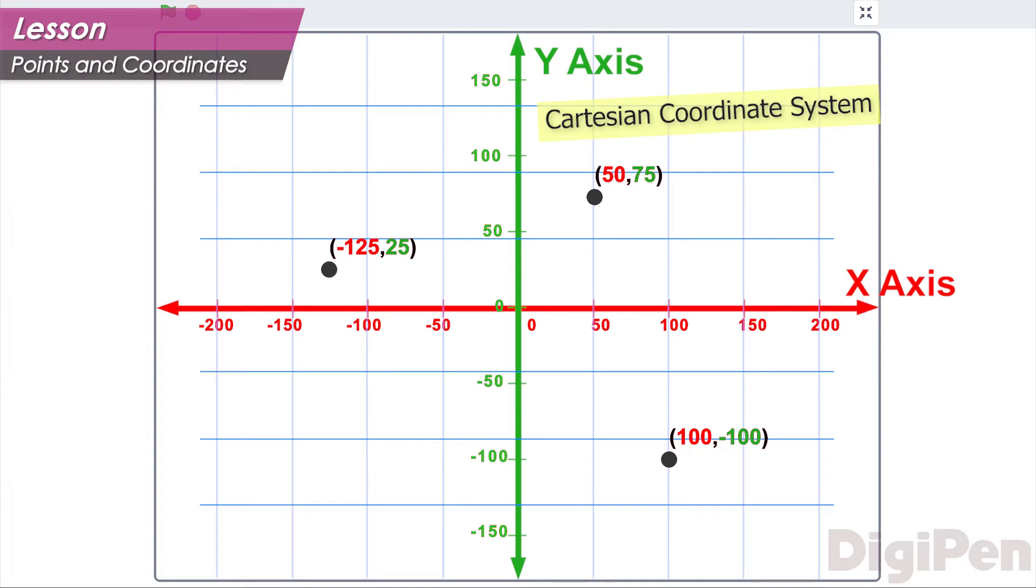Every point on the grid can be defined this way. You'll hear a lot more about points and positions in the upcoming videos.